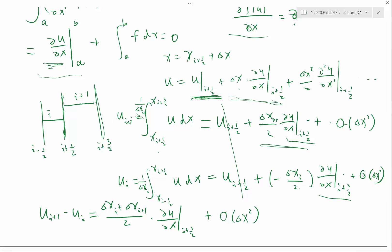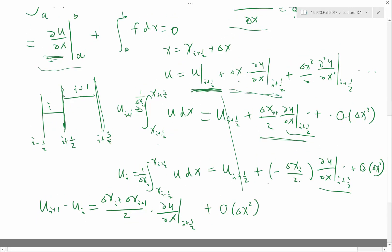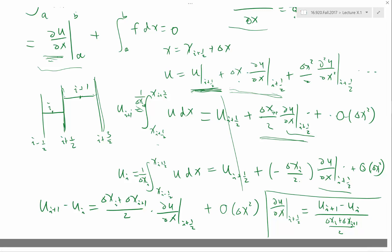So, a first-order approximation of the derivative at the interface i plus half is just: du/dx at i+1/2 ≈ (u_{i+1} − u_i) / (one-half delta x_i + one-half delta x_{i+1}), where the denominator is the distance between the two cell centers. This is the most straightforward way to approximate a flux in finite volume that involves derivatives — use Taylor series expansion to figure it out.